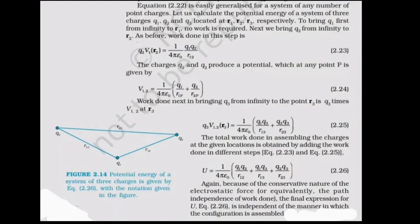The equation U = k·q1·q2/r12 is easily generalized for any number of charges. For three charges q1, q2, q3 at positions r1, r2, r3: bringing q1 from infinity requires no work. Bringing q2 requires work U12 = k·q1·q2/r12. Charges q1 and q2 together produce a potential at any point P: V12 = (1/4πε₀)[q1/r1p + q2/r2p].